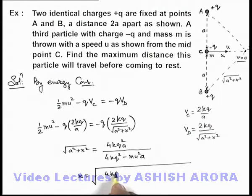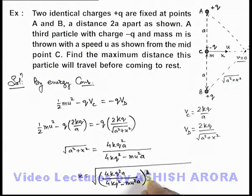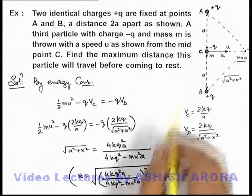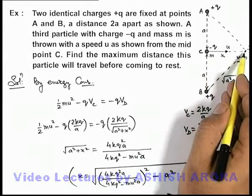4kq²a divided by (4kq² - mu²a) whole squared minus a². This will be the answer to the problem, as this is the distance which the particle will travel before coming to rest.